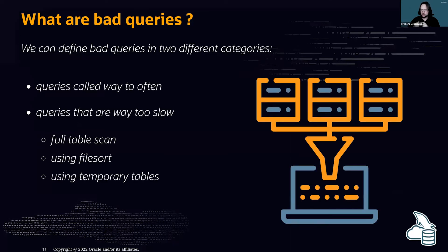First, queries that are called way too often — for example, one query called 15,000 times just to display one web page is way too much. Second, queries that are way too slow — even if it's one query that takes one minute every call, that's way too long. These slow queries typically do full table scans, use filesort for sorting results, or use temporary tables.